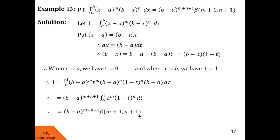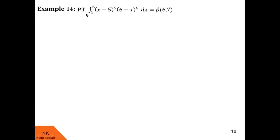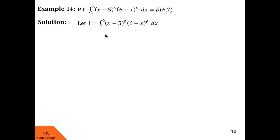Now let me show you a similar example with real values for a and b. Here we are asked to prove that the value of the integral of x minus 5 raised to 5 into 6 minus x raised to 6 dx over the limit 5 to 6 equals beta of 6 comma 7. We label this integral as I, then substitute x minus 5 as 6 minus 5 into t. But 6 minus 5 is 1, so x minus 5 equals t.